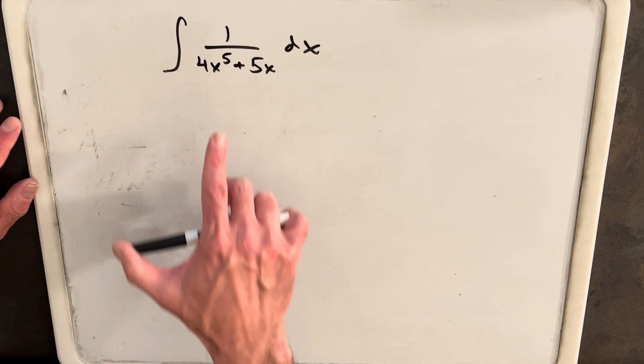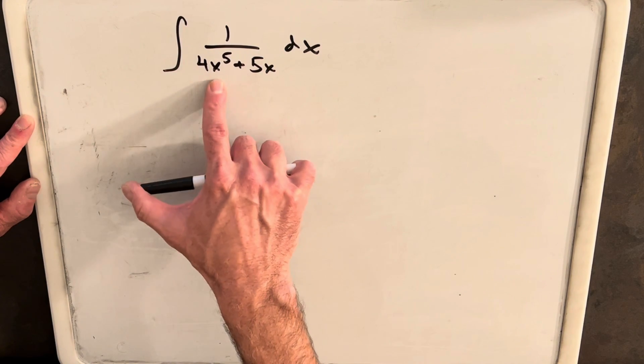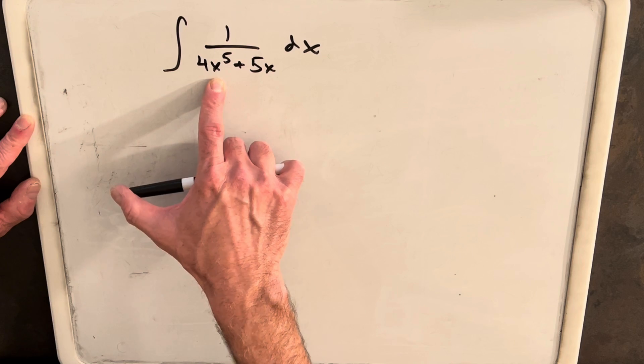But we can still try to factor the denominator. Notice we don't have to factor out an x, we could try to factor out an x to the 5th. So let's try that.